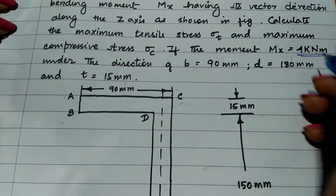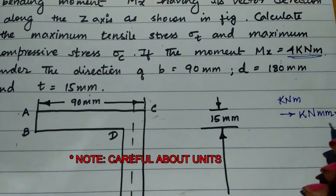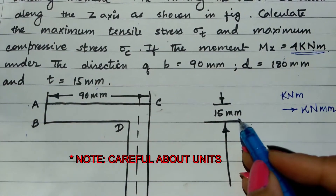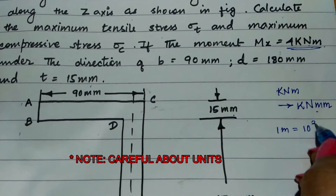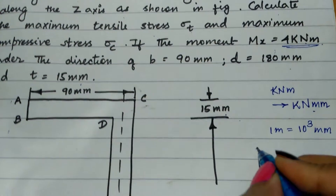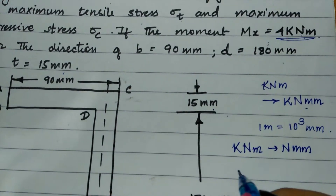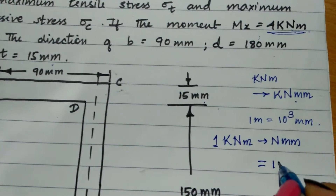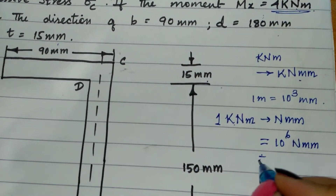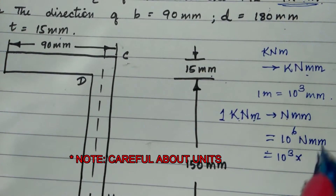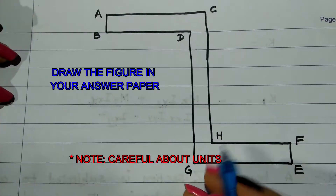The moment given is in kilo-Newton meters. Since all dimensions are in mm, you need to convert: 1 meter equals 10³ mm. Therefore, 1 kilo-Newton meter equals 10⁶ Newton·mm — 10³ from kilo-Newton to Newton, and 10³ from meter to mm.